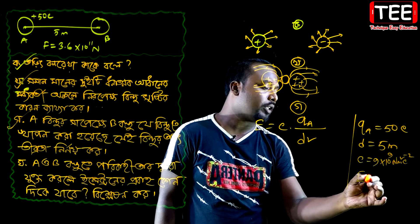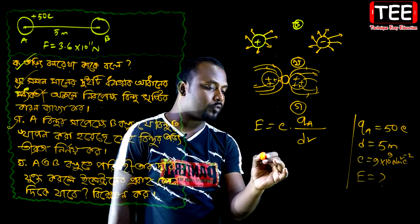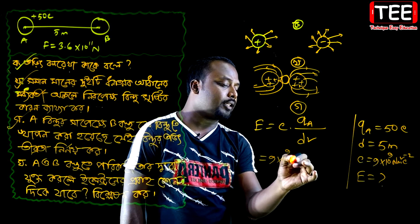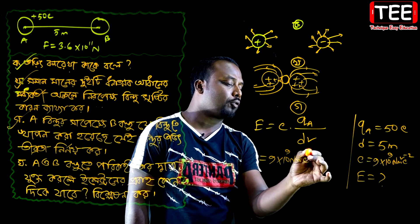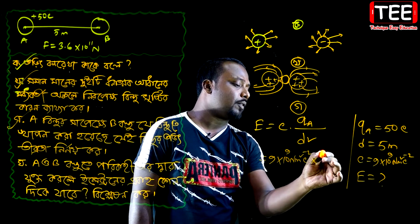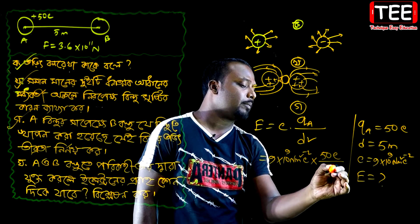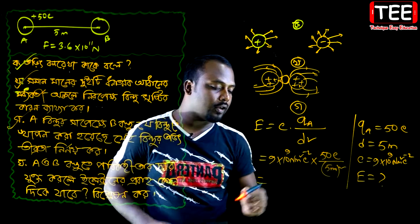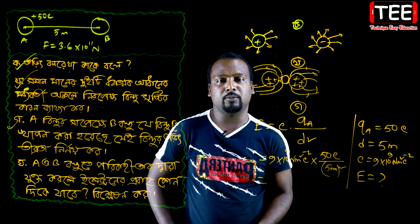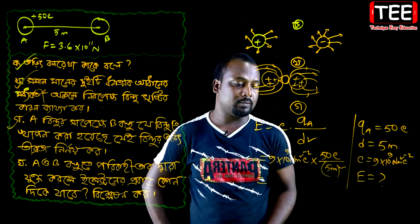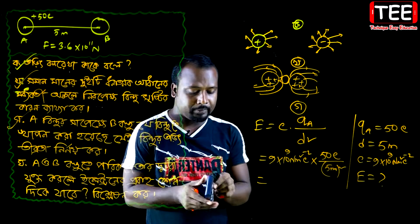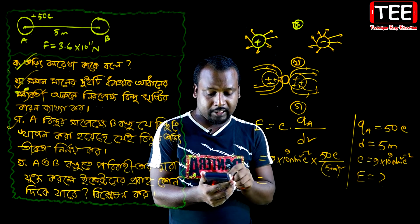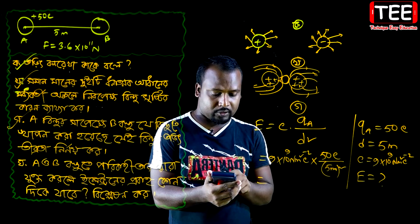So, this is equal to 9 into 10 to the power of 9 Newton meter square per coulomb square, into 50 coulomb divided by 5 meters. So, this is equal to 9 into 10 to the power of 9 into 50.